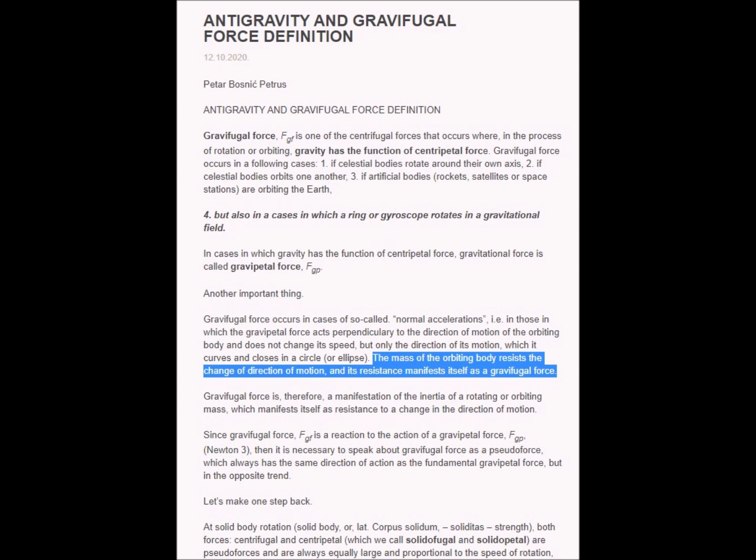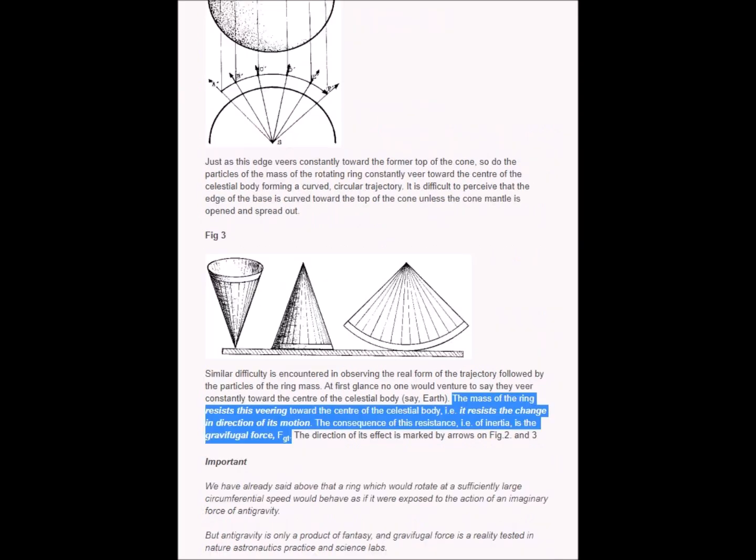It goes on to say that the gravifugal force occurs in cases of normal accelerations such as those in which its counterpart the gravipedal force acts. The mass of an orbiting body resists any change in direction of motion and this resistance manifests as the gravifugal force.